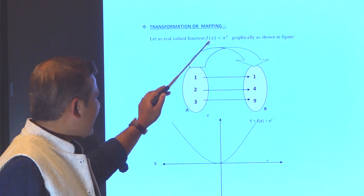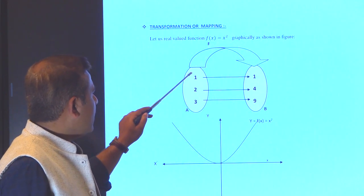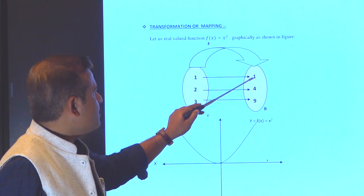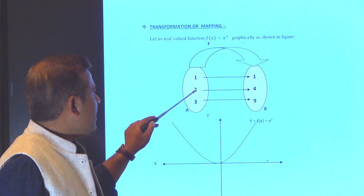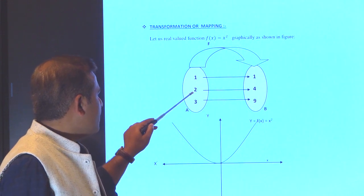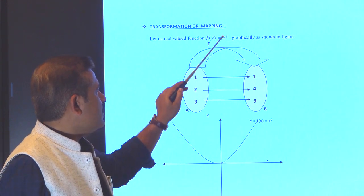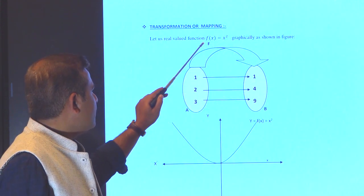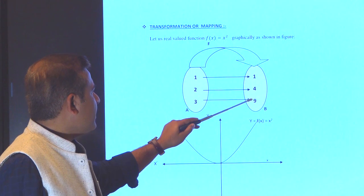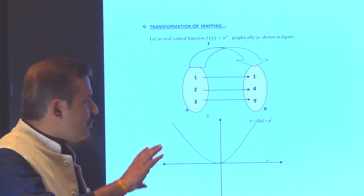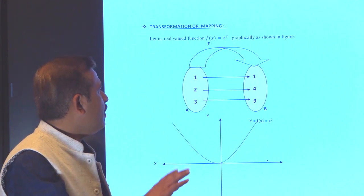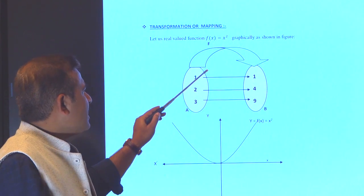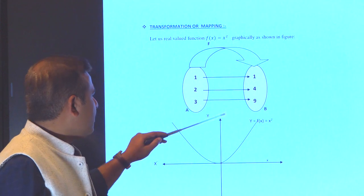On substituting the values: on the left hand side, 1 gives 1² = 1 on the right hand side. When we substitute 2, it becomes 2² = 4 on the right hand side. And 3 gives 3² = 9. This is the way of mapping, and this is the way of transformation.